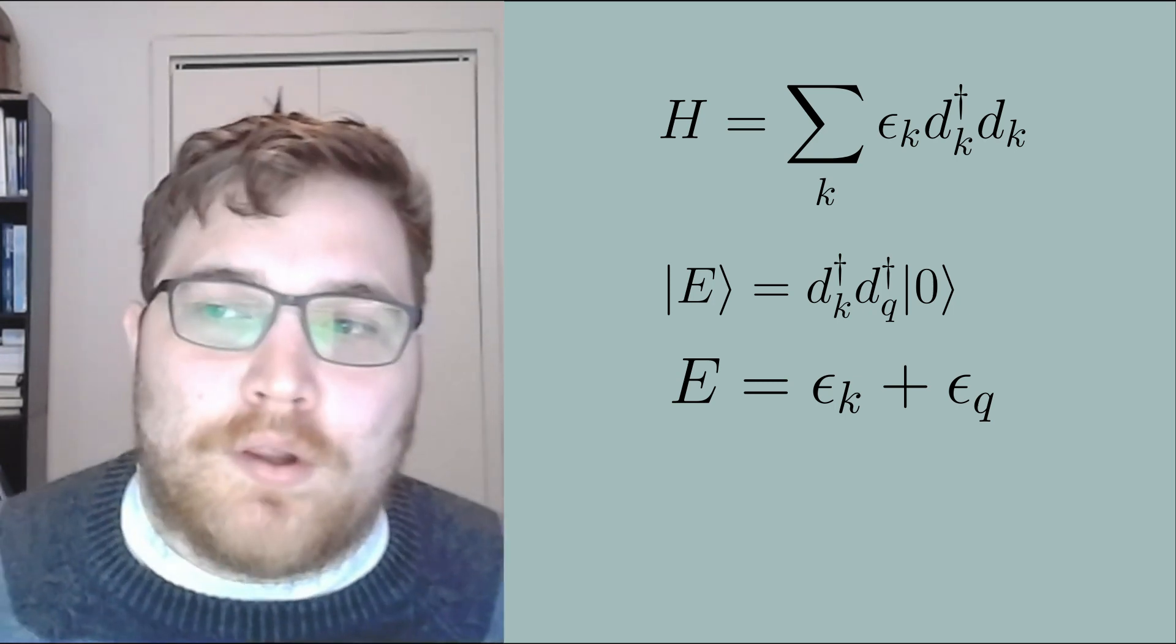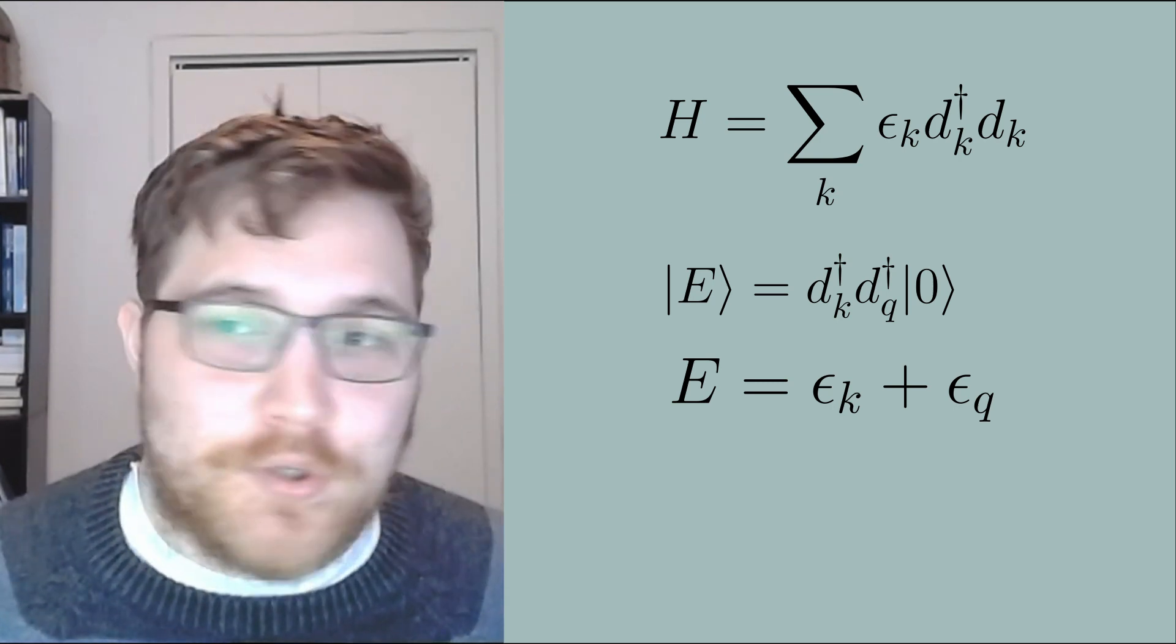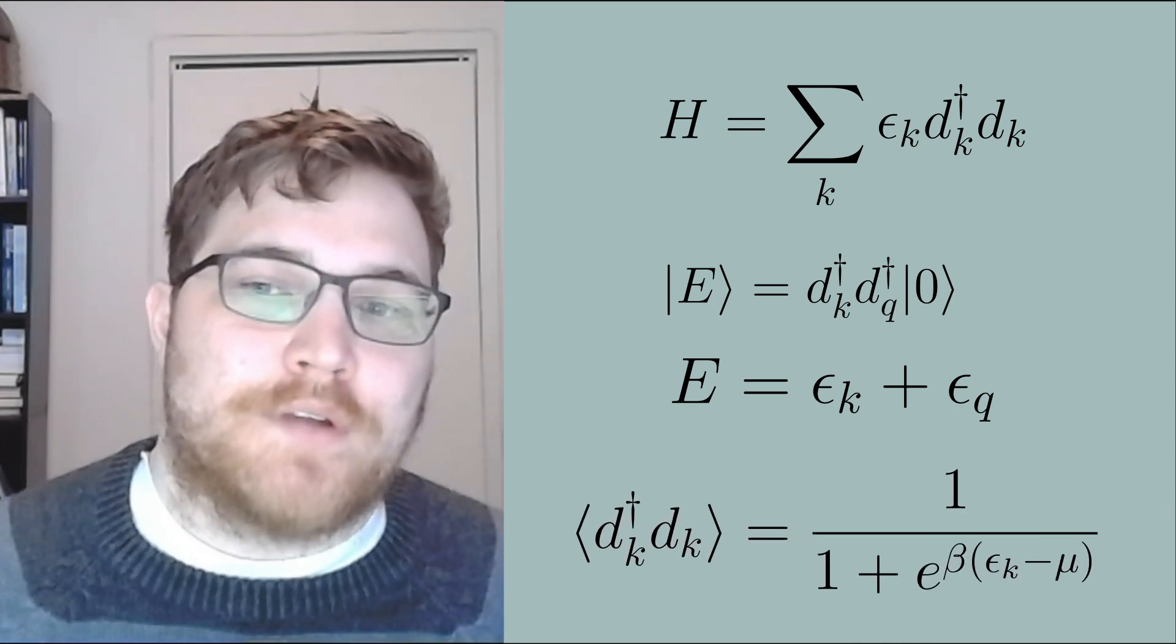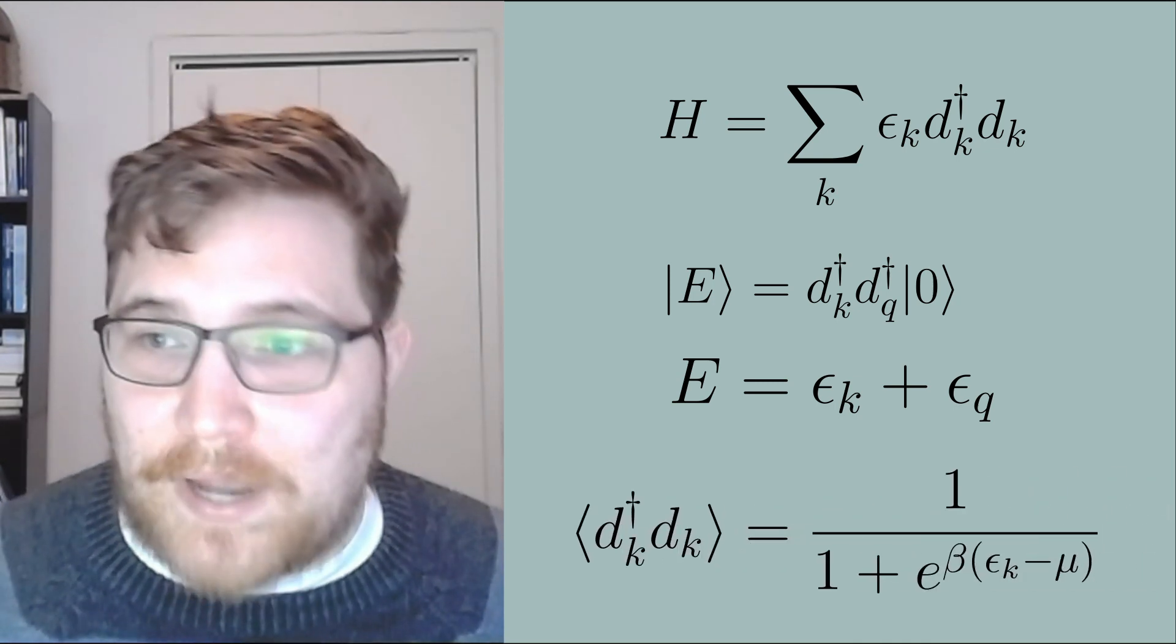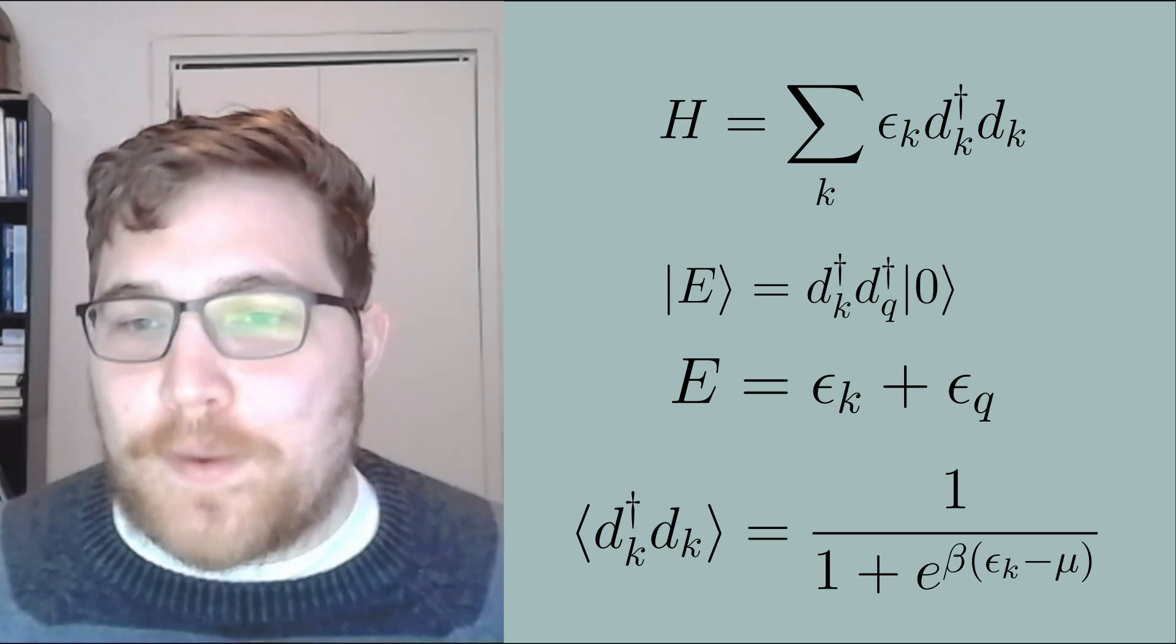So that's the energy eigenstates. What about thermal properties? Well if you watched my video on the Fermi Dirac distribution or you are familiar with it you will probably notice right away that the number operators will obey a Fermi Dirac distribution in the grand canonical ensemble. So there we have it.